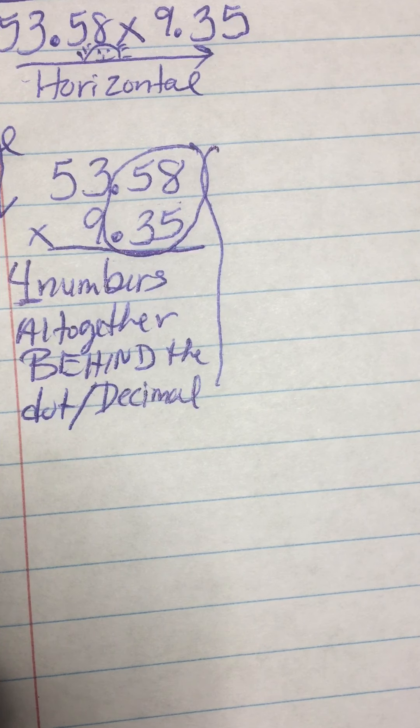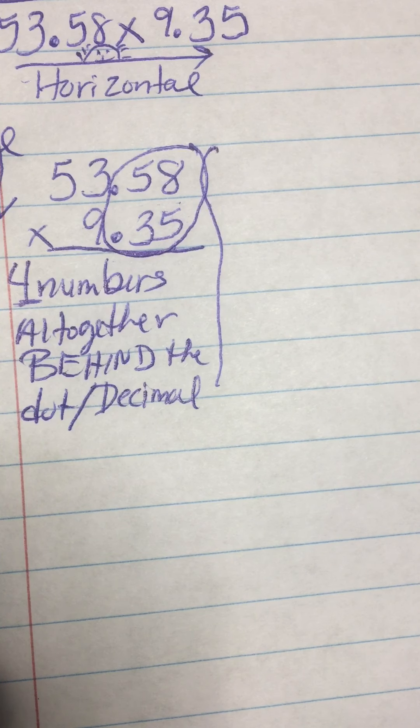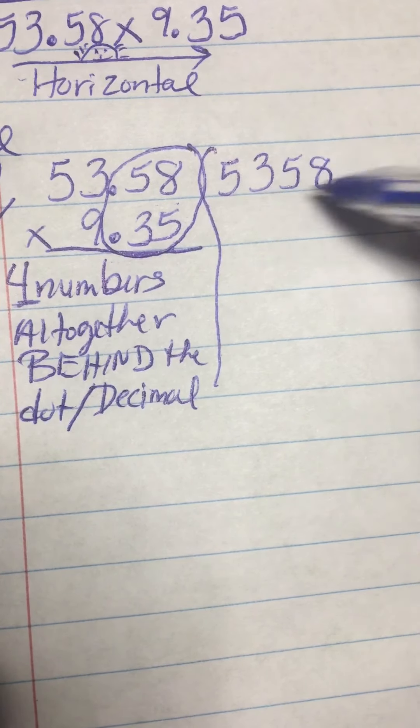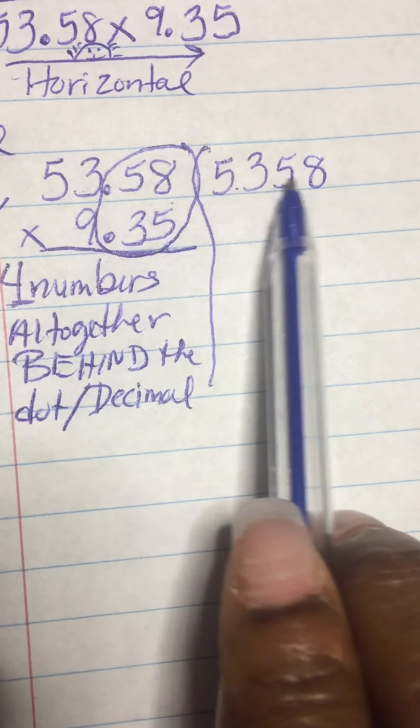Second thing is go ahead and write 53.58 three times. Five, three, five, eight. And don't write them too close together so you have a little bit of space in between each number.